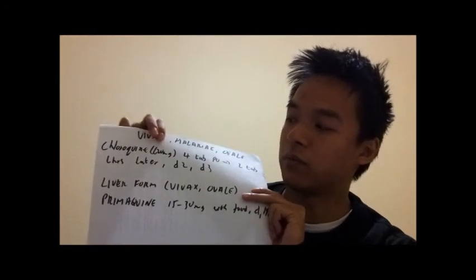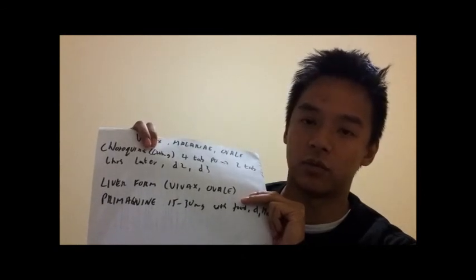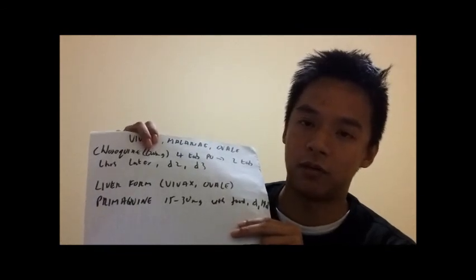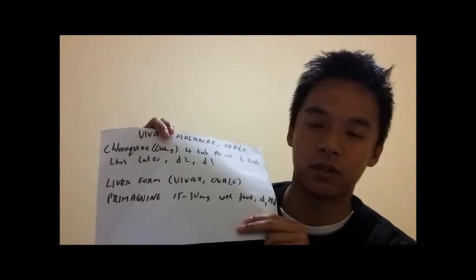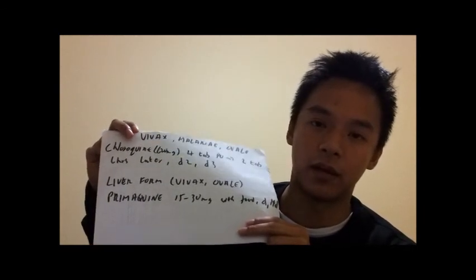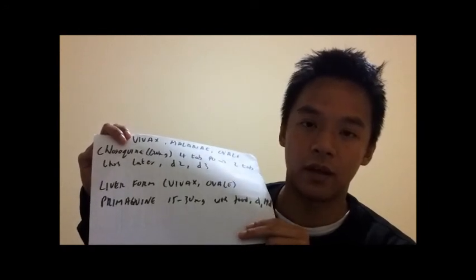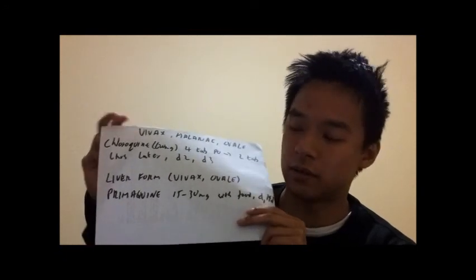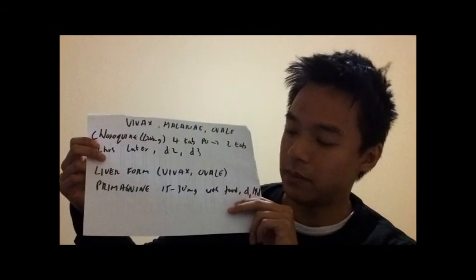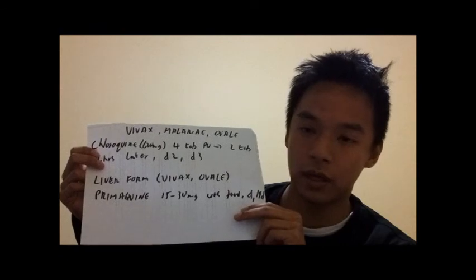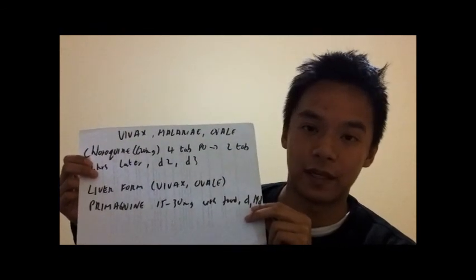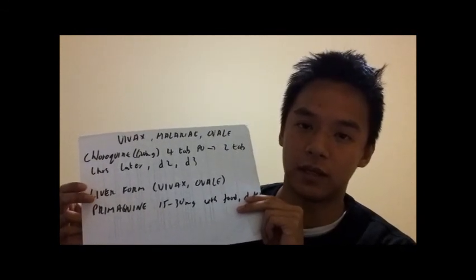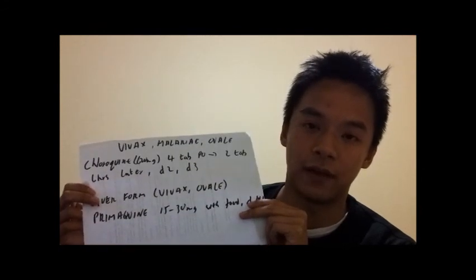For chloroquine dosing, the patient will initially take four tablets which equates to 620mg. Then six hours later they'll be reduced to two tablets — 310mg — and that is repeated on days two and three. Now P. vivax and P. ovale can form hypnozoites in the liver, which is responsible for relapses seen in malaria. So we treat that with primaquine at 15 to 30mg daily with food for 14 days. Care needs to be taken with patients who have G6PD deficiency, as when taking primaquine they can get the adverse effect of haemolysis.